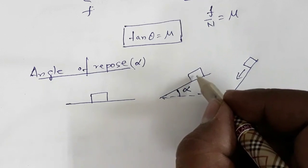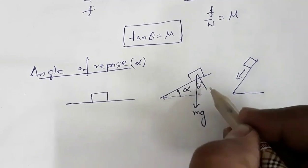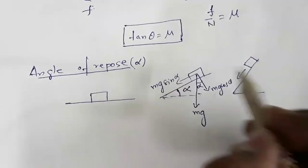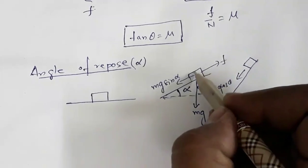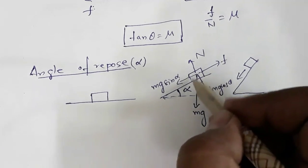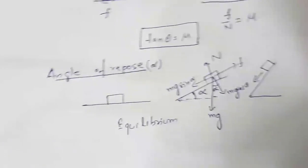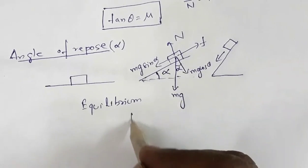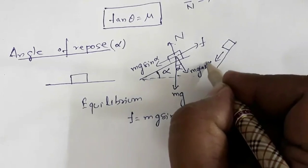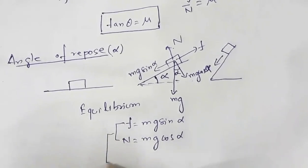If the block has mass m, the component of weight along the plane is mg sin α and perpendicular to the plane is mg cos α. The friction force acts up the plane and N is the normal reaction. Under equilibrium condition, F = mg sin α and N = mg cos α. Dividing these two equations gives F/N = tan α.